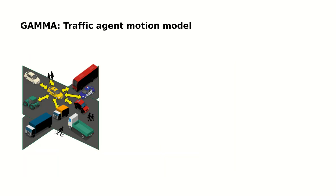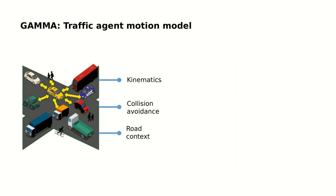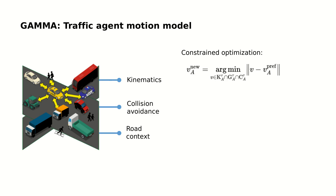The core of SUMMIT is our traffic agent motion model, GAMMA, that generates realistic crowd behaviors. GAMMA models three factors that determine the behaviors of urban crowds: kinematic constraints of vehicles, collision avoidance among agents, and the shape of the road structure. The motion modeling problem is formulated as a constraint optimization in the velocity space of agents.